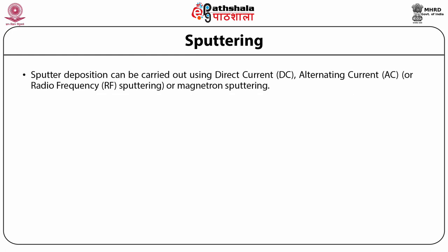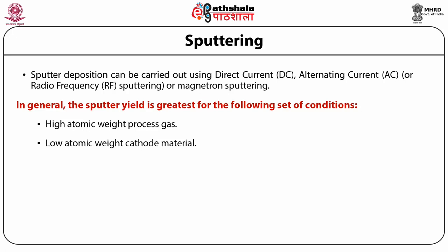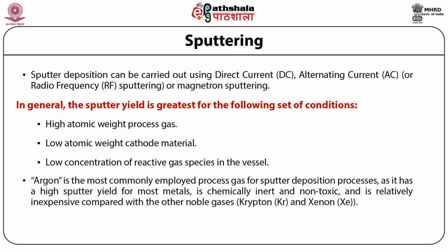Sputtering deposition can be carried out using direct current (DC), alternating current (AC), radio frequency (RF), or magnetron sputtering. In general, the sputter yield is greatest with: (1) high atomic weight process gas, (2) low atomic weight cathode material, and (3) low concentration of reactive gas species in the vessel. Argon is the most commonly employed process gas for sputter deposition as it has high sputter yield for most metals, is chemically inert and non-toxic, and is relatively inexpensive compared with other noble gases such as krypton and xenon.